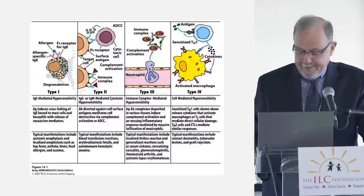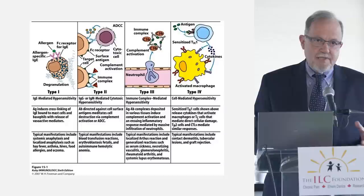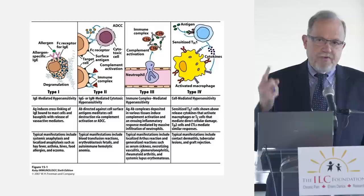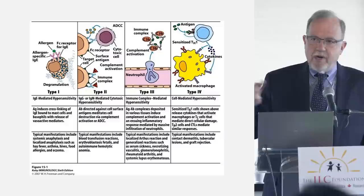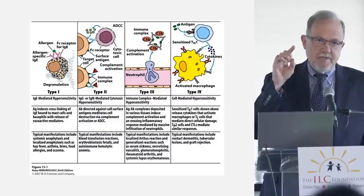What I want to impress on you is that the immune system is complicated. When we talk about mast cells and what happens when mast cells are activated, we're talking about one very specific arm of the immune system — those are called type one reactions — and they have no bearing at all on what happens under other circumstances with the immune system. We're looking at a very specific type of reaction when mast cells are activated.